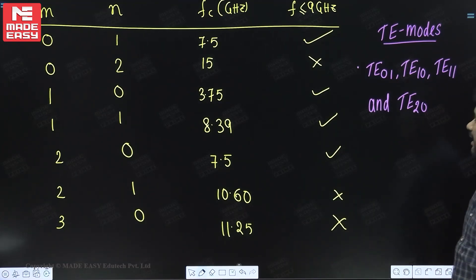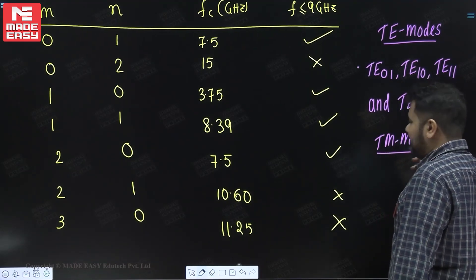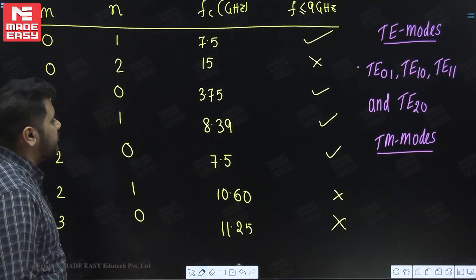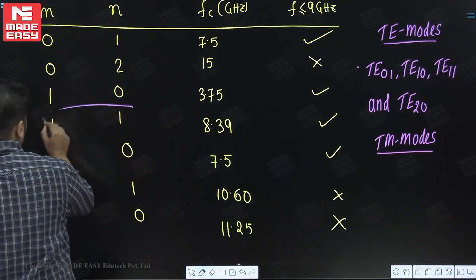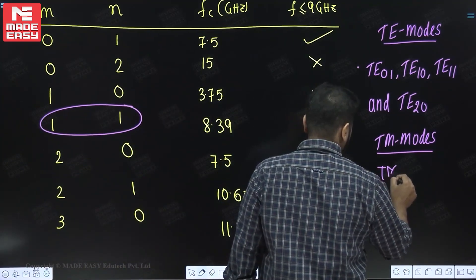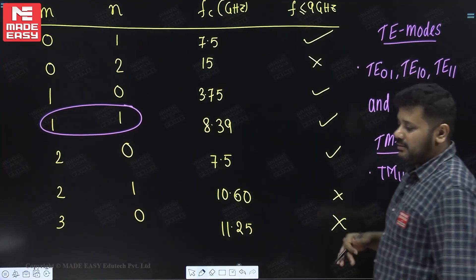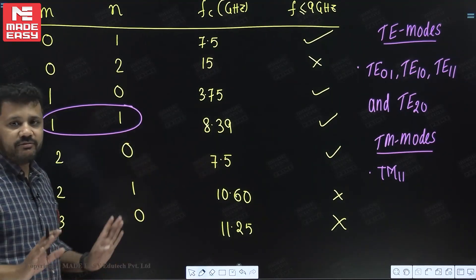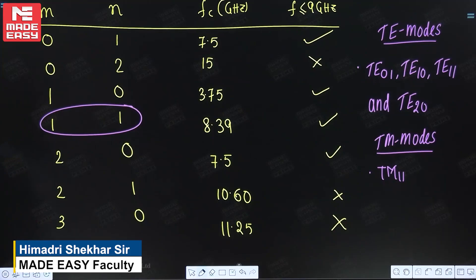The TE modes that are allowed are: TE(0,1), TE(1,0), TE(1,1), and TE(2,0). For TM modes, TM(m,0) and TM(0,n) do not pass, so the only TM mode allowed is TM(1,1). In total, there are 5 modes: 4 TE modes and 1 TM mode.